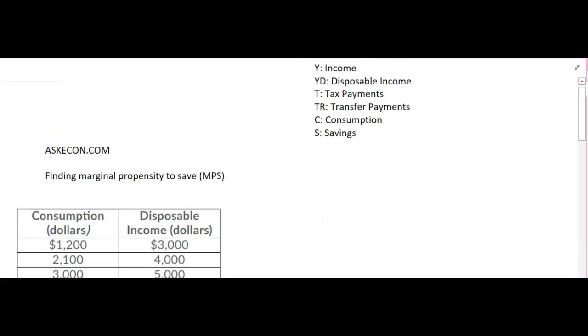Here we have the notations. We have income, disposable income, tax payments, transfer payments, consumption and saving. Before working on the question, I want to give a little bit of background information.